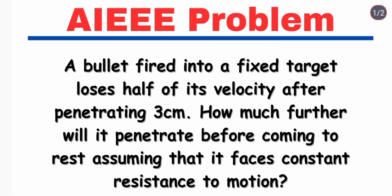Hello everyone, in this video we have a bullet fired into a fixed target loses half of its velocity after penetrating 3 cm. How much further will it penetrate before coming to rest assuming that it faces constant resistance to motion?